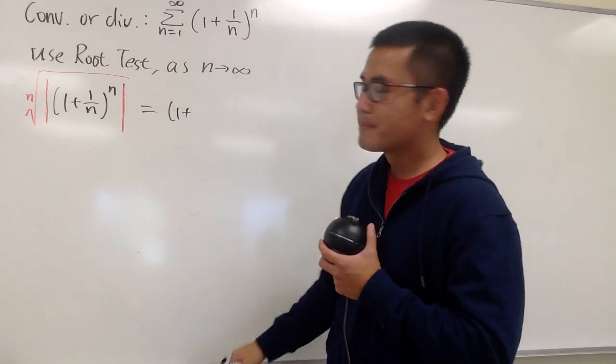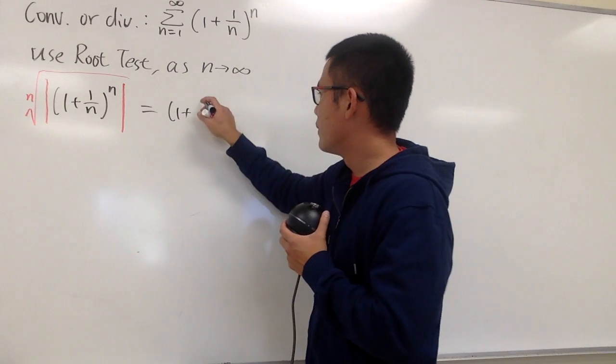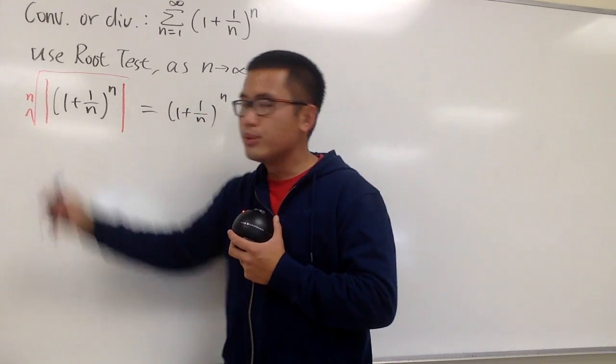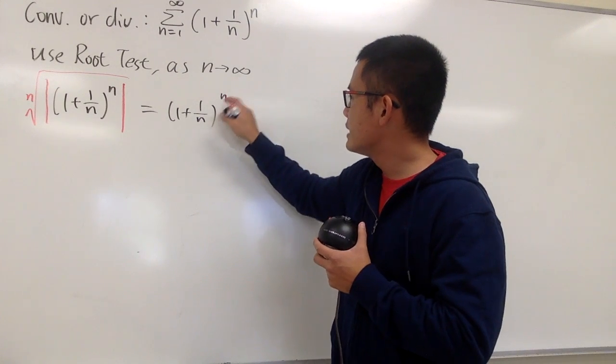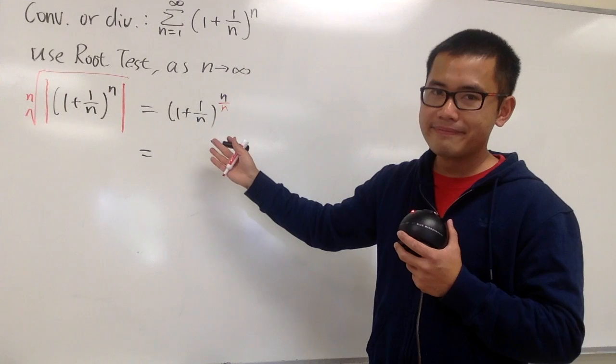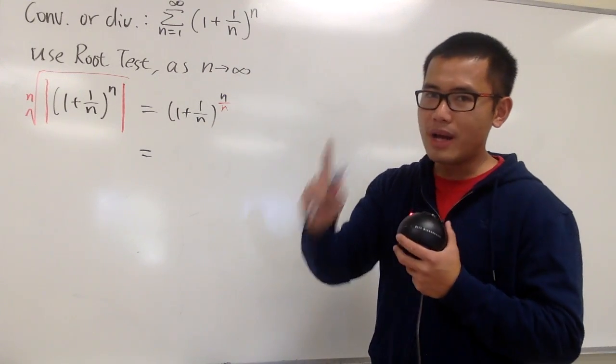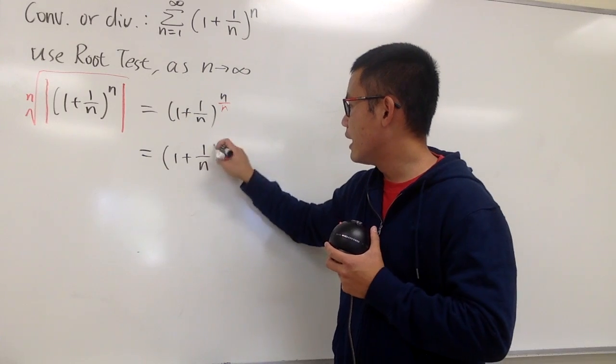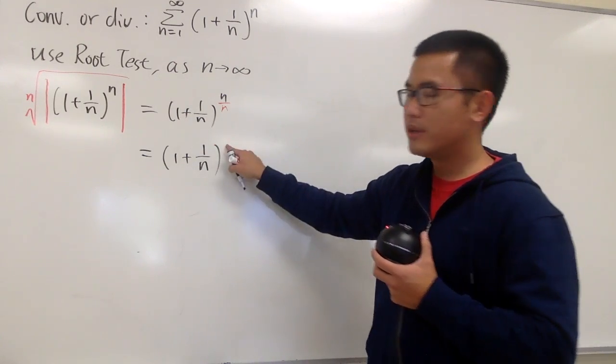Here, 1 over n, and then this is n. The nth root means that we divide this power by n. n over n is equal to 1, so this is going to be 1 plus 1 over n only. The power here is 1.